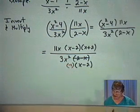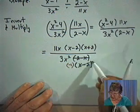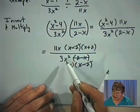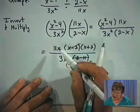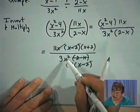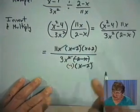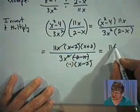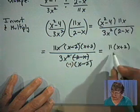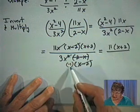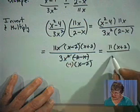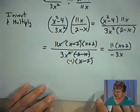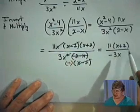Now we're ready to simplify. We've got an X minus 2 in both the denominator and numerator, so those cancel. We've got X squared in the denominator and an X in the numerator, so we cancel one of those Xs. What we have left is 11 times X plus 2 in the numerator, and negative 1 times 3X in the denominator — so let's just write that as negative 3X.